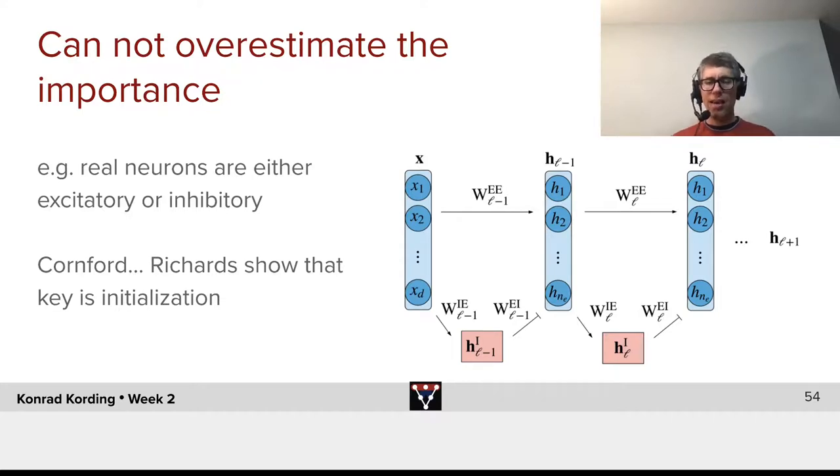So what they have is they have a network here. Don't worry about the details, but they basically have a network that has excitatory and inhibitory cells. This violates the assumptions behind the Xavier initialization.